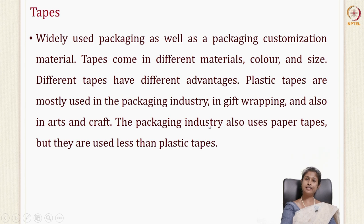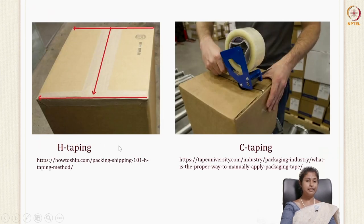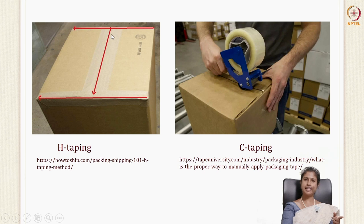Another ancillary packaging material is tapes. Tapes can be used both for packaging and packaging customization. They come in different materials, sizes, and colors with different advantages. The packaging industry mainly uses plastic tapes, though paper tapes are also used but less commonly. Depending on how the tape is applied to the surface, you can have H-taping — on two sides and in the middle — or C-taping from one end to another.